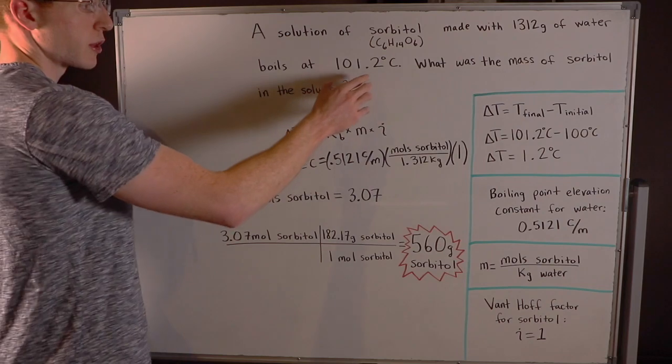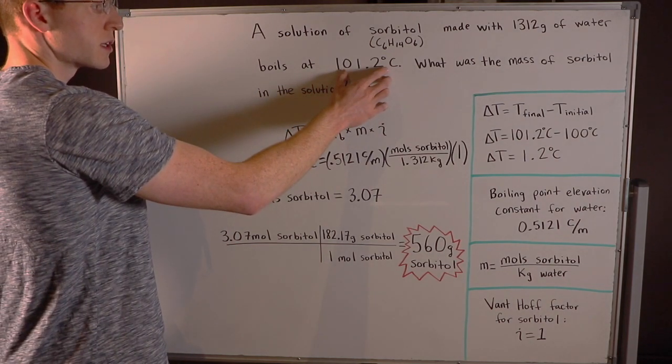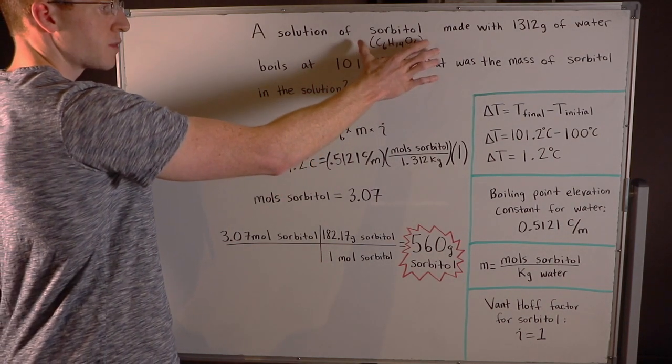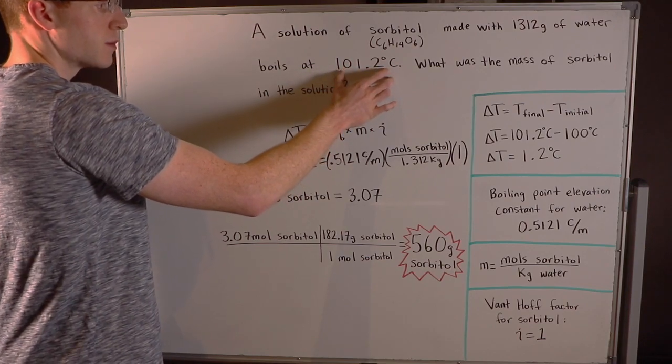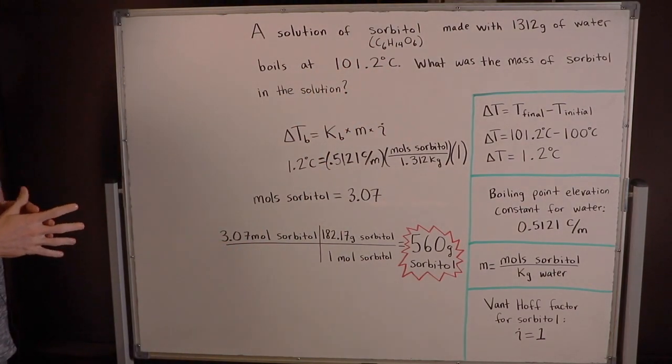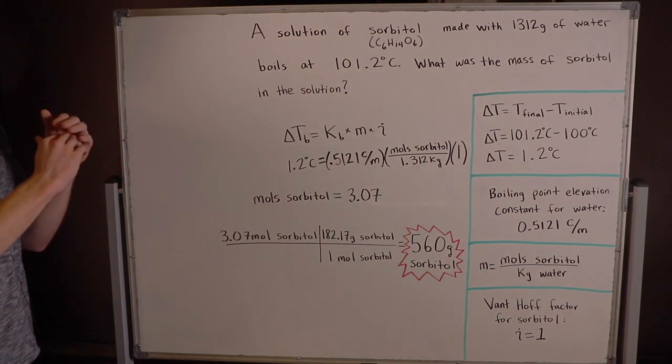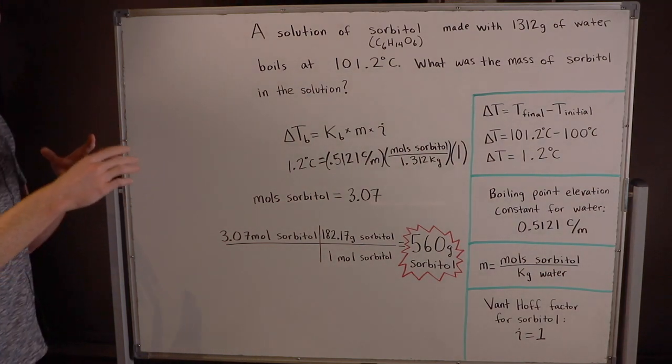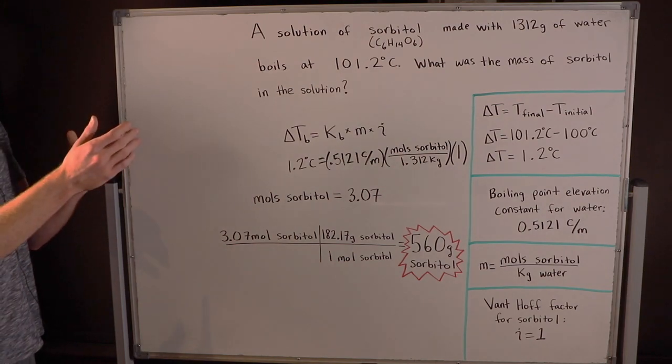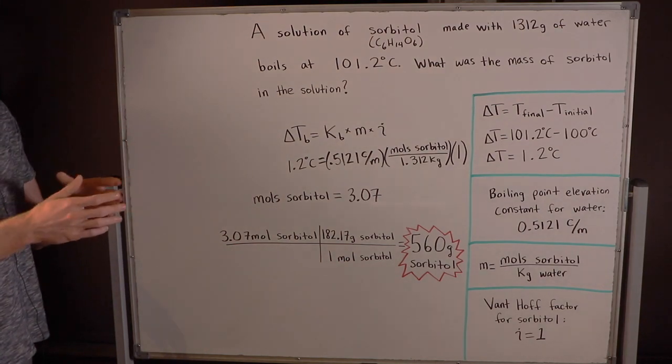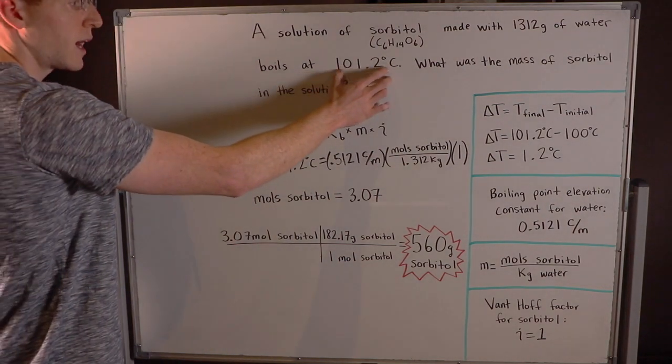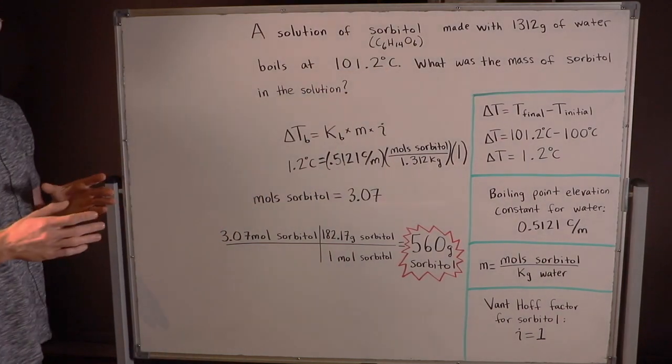So normally pure water has a boiling point of 100°C, but now you can see here that since we dissolved the sorbitol into the water, the boiling point has gone up a little bit, and that makes sense right? The sorbitol is acting as those green dots. It's crowding out the surface of the water, and thus it's harder for the water to evaporate at the surface, generate its vapor pressure, and boil. So we have to get this up to a higher temperature to start the boiling process.